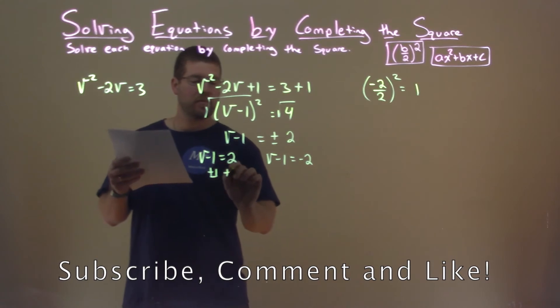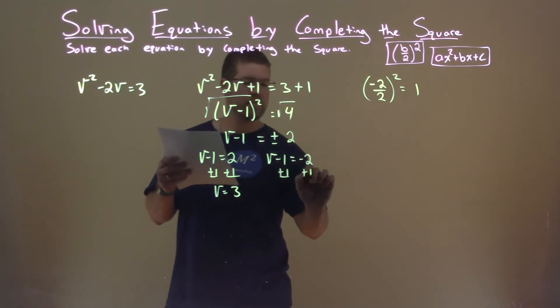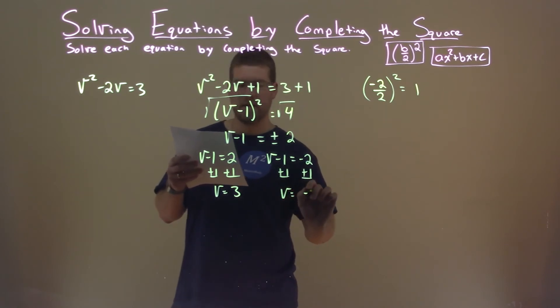Add 1 to both sides, and we have v equals a positive 3. Do it again here, v equals a negative 1.